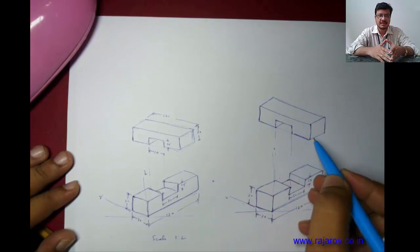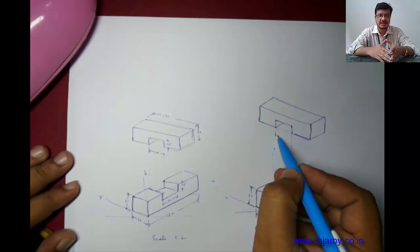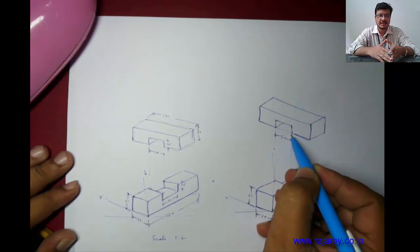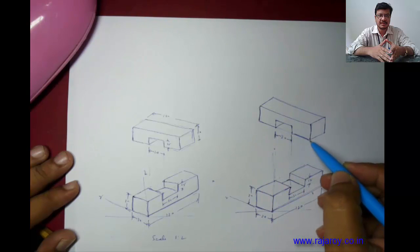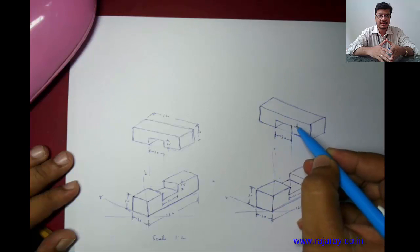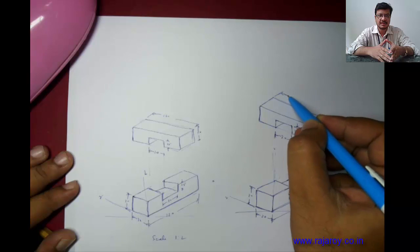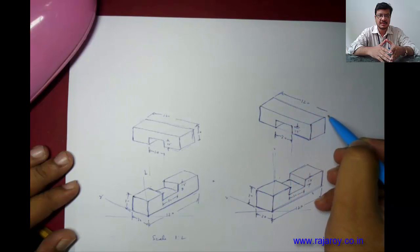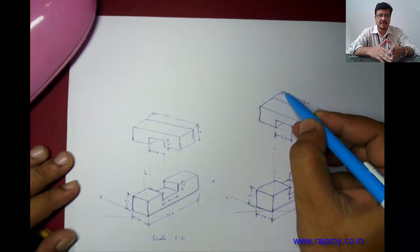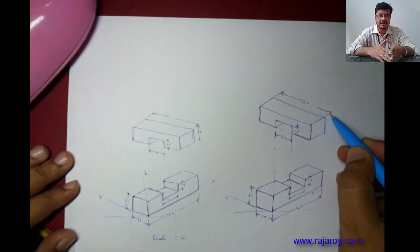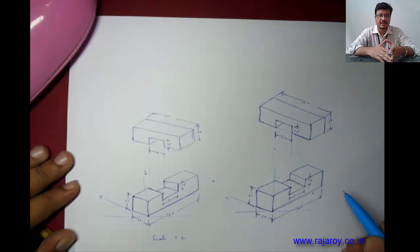Darken the required portion. Apply the dimension. This is 30, and this height is 15, and this distance is 120, and this is 30. In this way you can draw the half-lap joint isometric view.